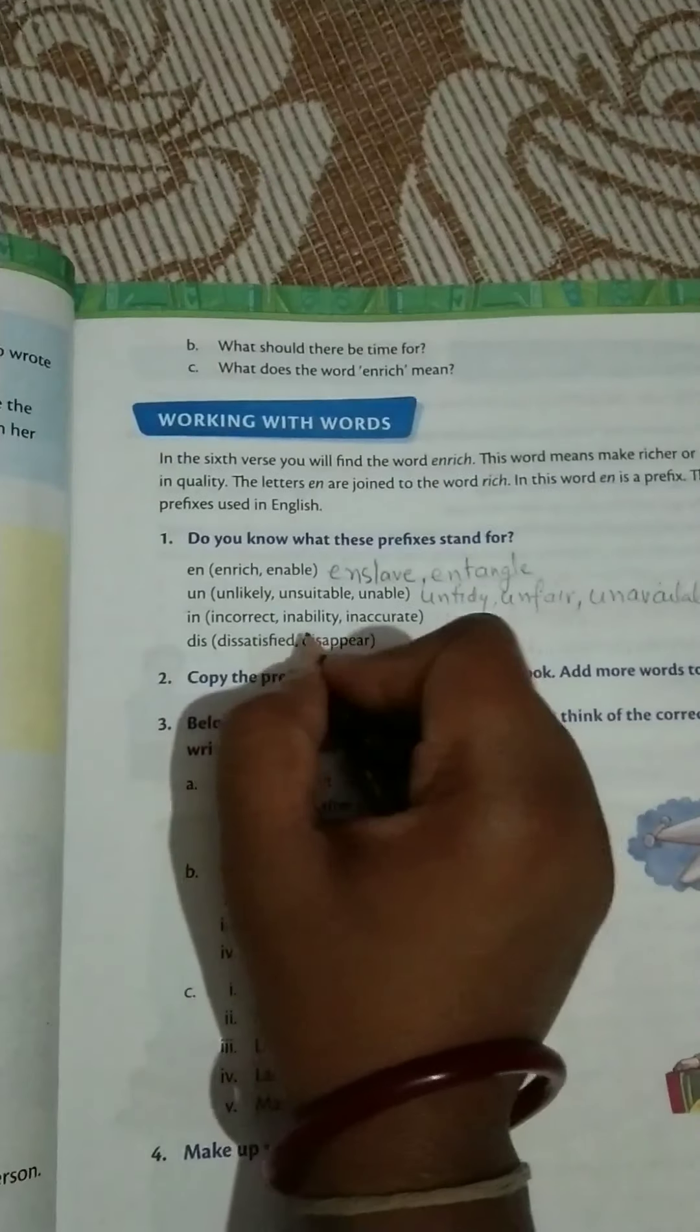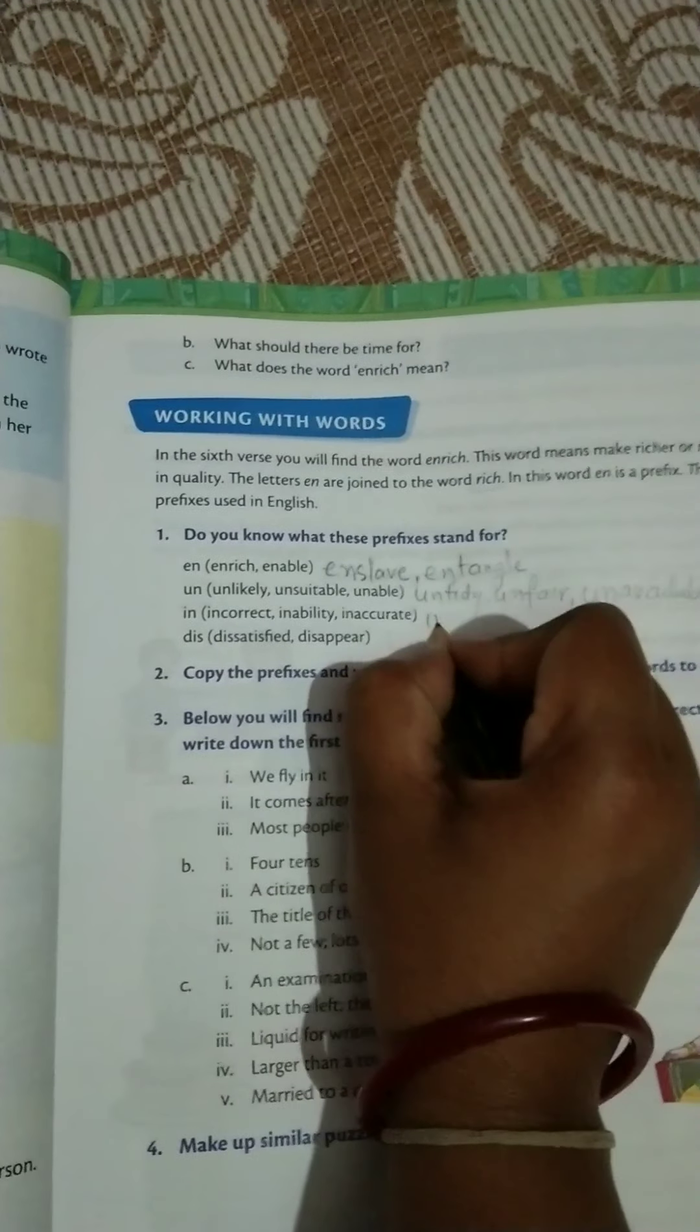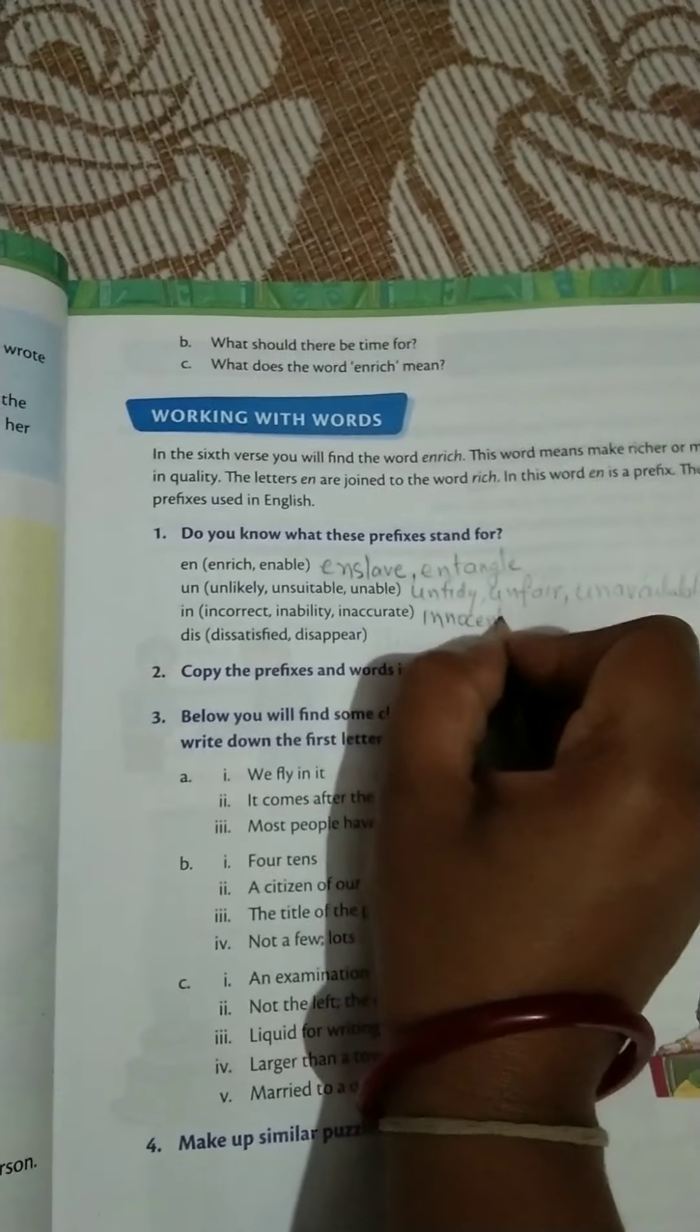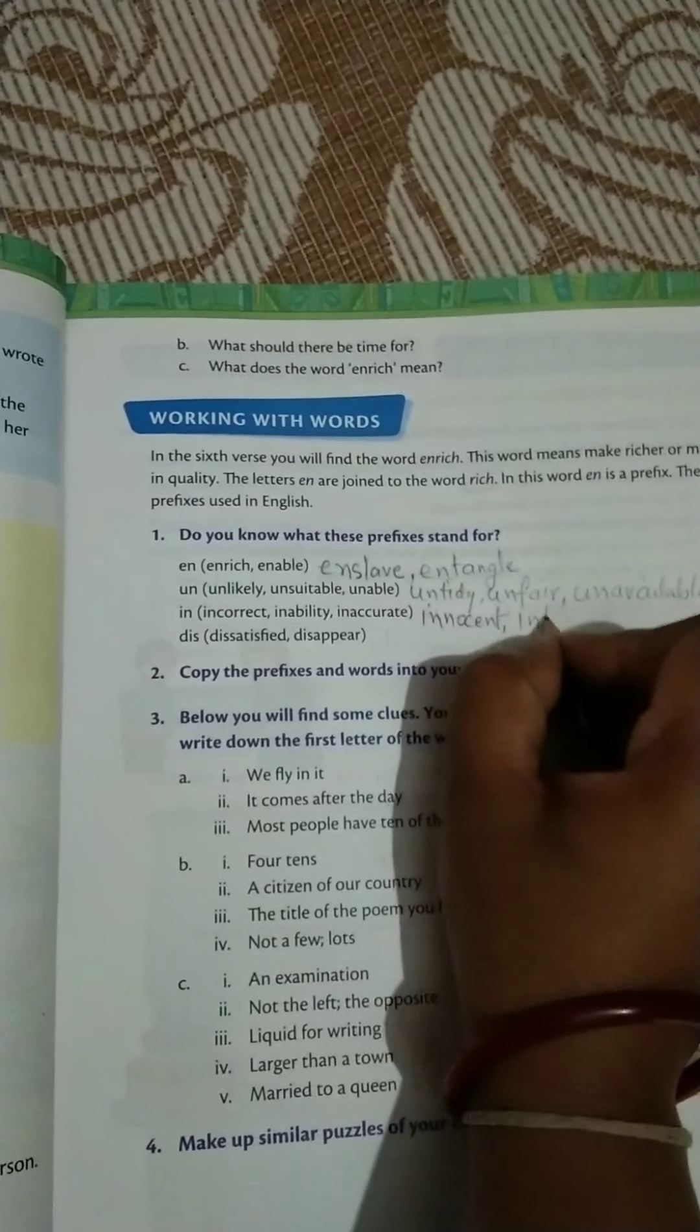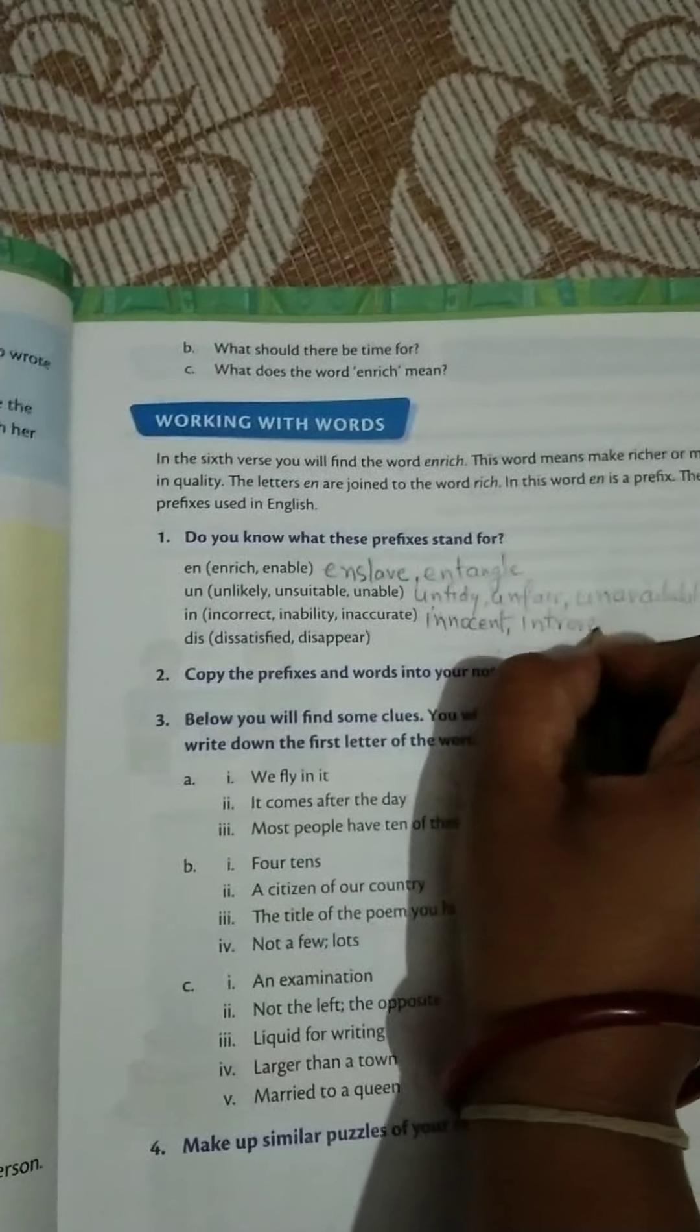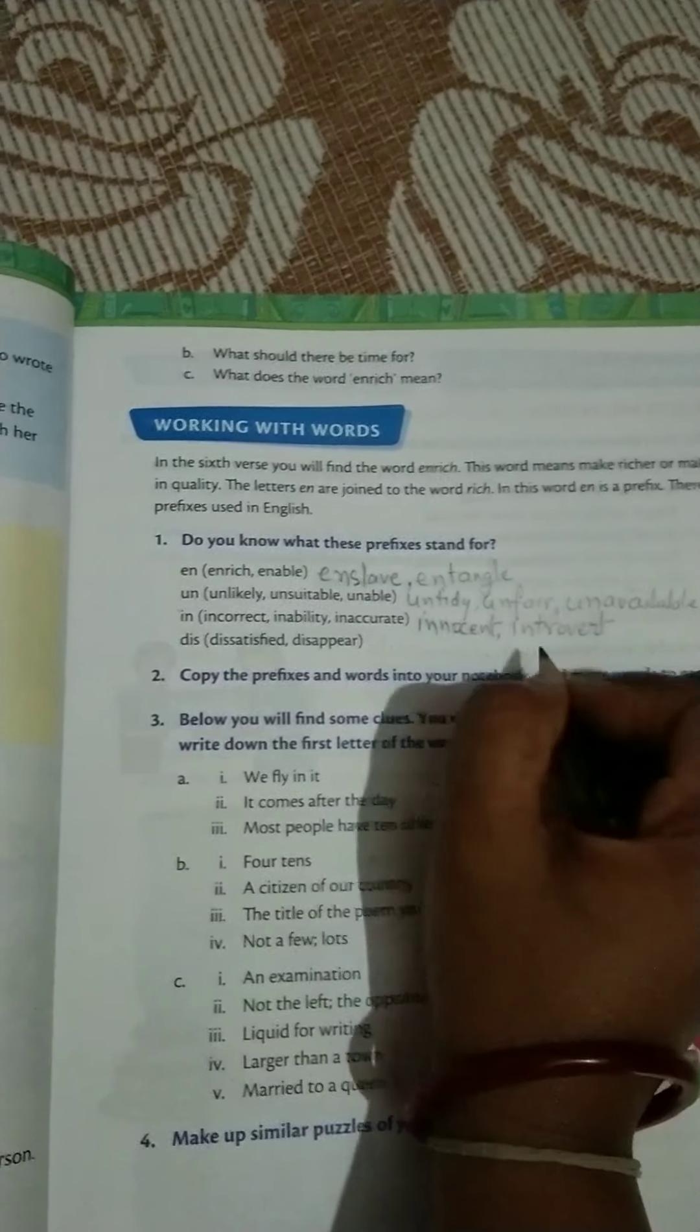Next is incorrect, inability, inaccurate. Like this, other words are innocent, innocent and introvert. So 'in' word is used as a prefix in this.